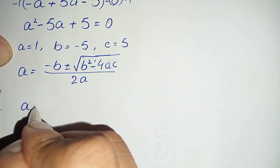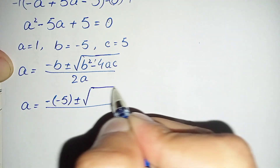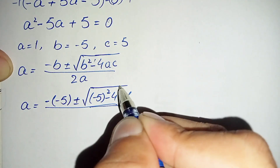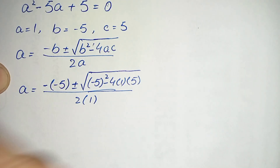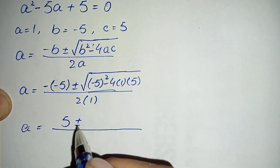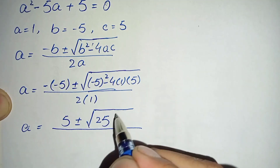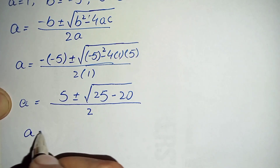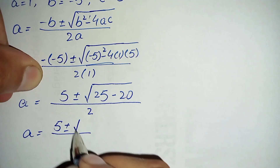Substituting the values into the quadratic formula: a equals minus b, and since b is minus 5, this becomes plus 5, plus or minus square root of b² which is (minus 5)² equals 25, minus 4ac which is 4 times 1 times 5 equals 20, so 25 minus 20, all divided by 2 times 1, which is 2.